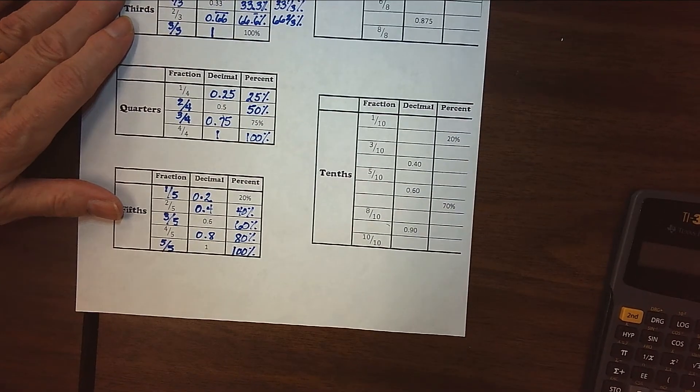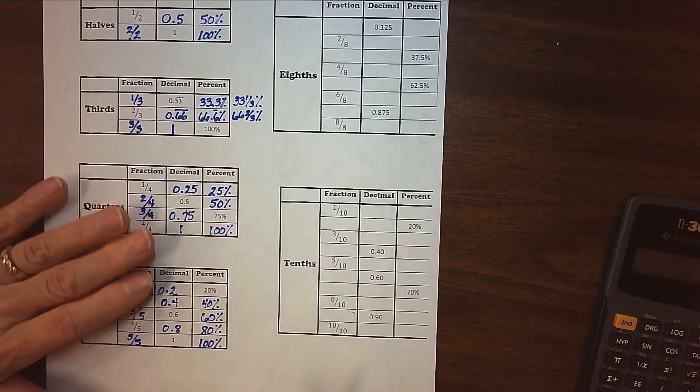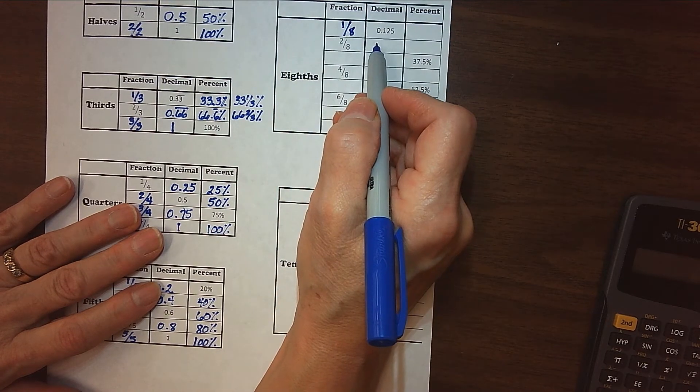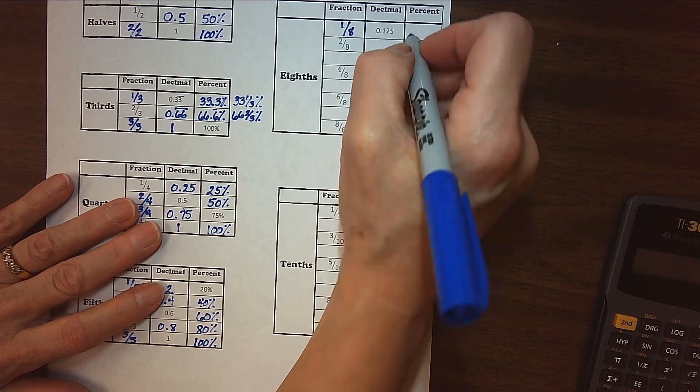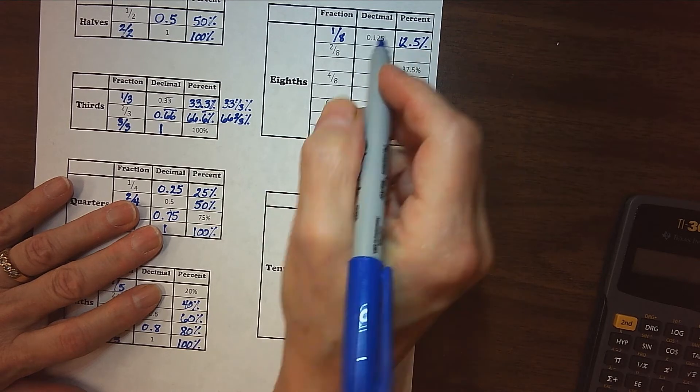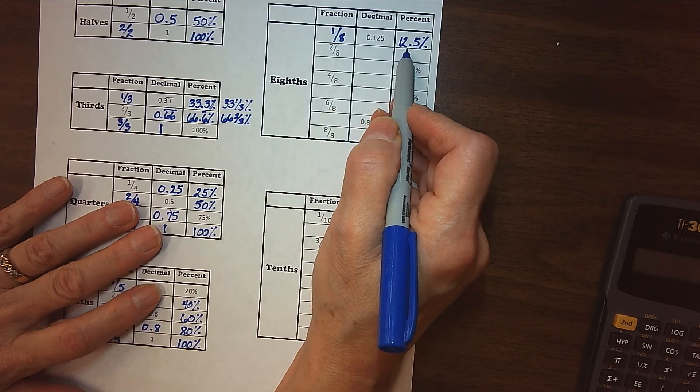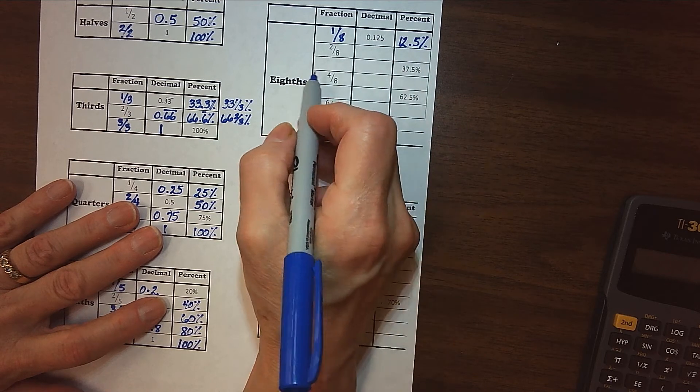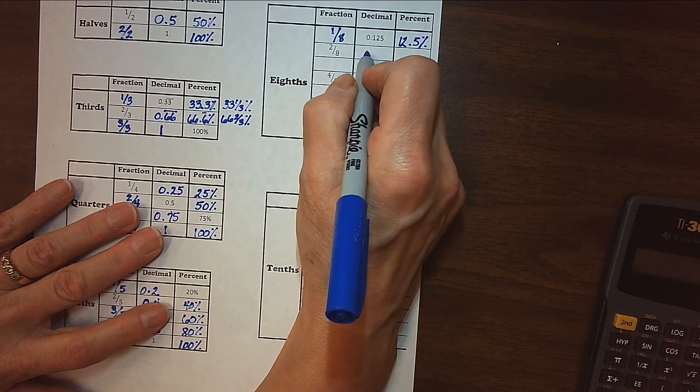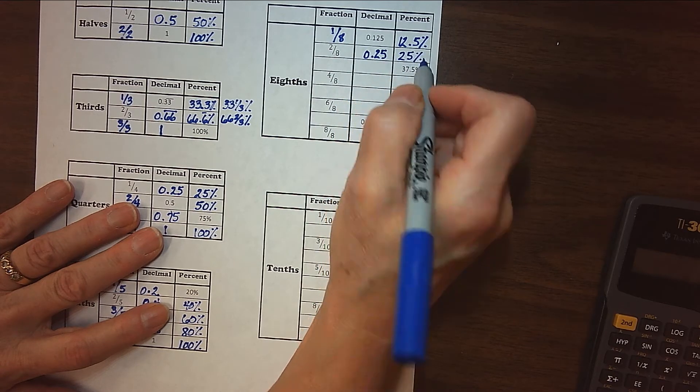All right. Now the ones that maybe are a little bit trickier, not quite as common to us, are the eighths. So one-eighth is 0.125 or 12.5%. Again, really, if you just remember the one-two-five, the decimal is 0.125 and the percent would just be moving that decimal point over two places. So two-eighths, that's like one-fourth, right? If we reduce two-eighths, it'd be one-fourth. So then we know that's got to be 0.25 or 25%.